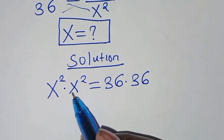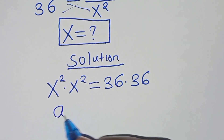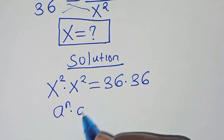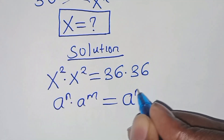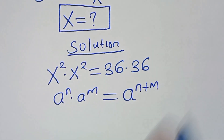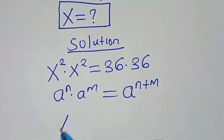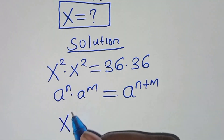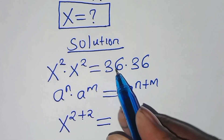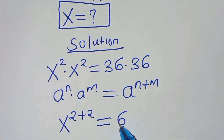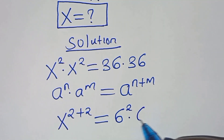Now x squared times x squared is in the form of a to power n times a to power m, which we can express as a to power n plus m. Applying this property, we have x to power 2 plus 2, which equals 36 times 36 — that is 6 squared times 6 squared.